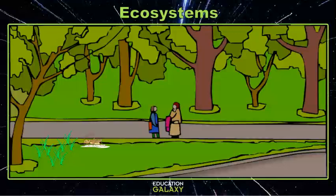Now let's find something that eats grass. A cricket! A cricket is a consumer because he has to eat grass to get the energy. So when we draw our energy flow, we point the arrow towards him since he's getting the energy. Now let's find a bird that eats a cricket. A finch is also a consumer since he has to eat to get energy. Again, the flow of energy points to him. Now, what we've made here is a food chain.